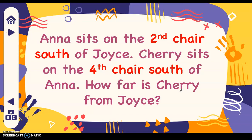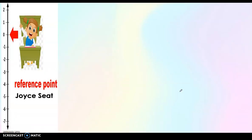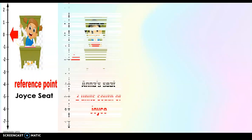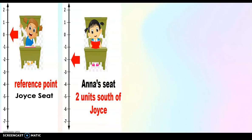Let's have another example. Anna sits on the second chair south of Joyce. Cherry sits on the fourth chair south of Anna. How far is Cherry from Joyce? Let's visualize it using the number line. This is the reference point, which is Joyce's seat. Anna's seat is two units south of Joyce. So if this is Joyce, this is Anna's seat because it's two units south of Joyce.